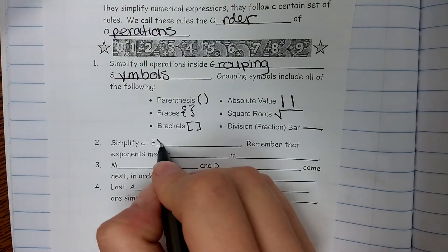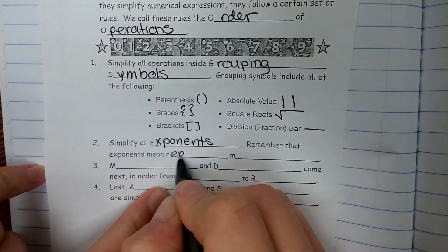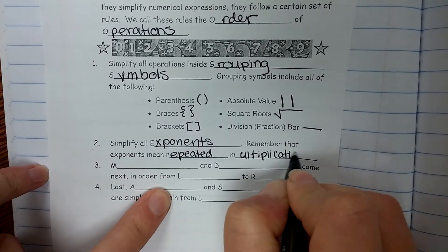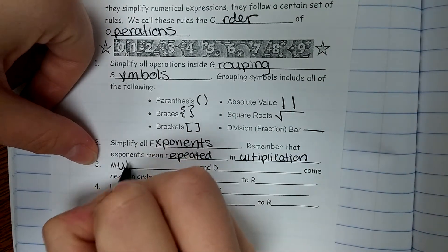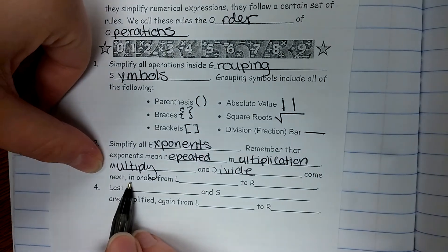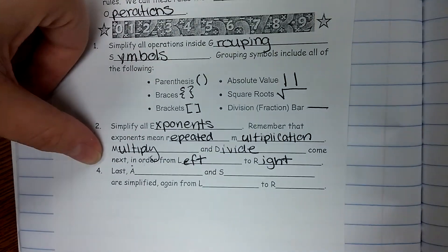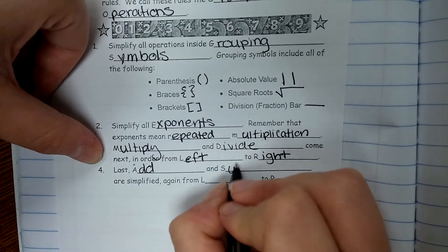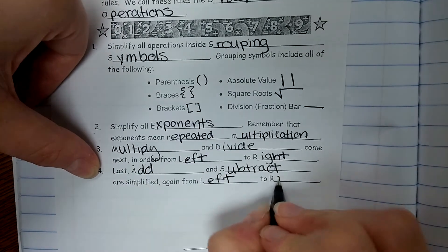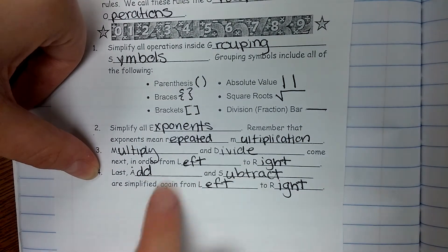So step two is to simplify all exponents. Remember that exponents mean repeated multiplication. Step three is to multiply and divide, come next, and they're in order from left to right, so you do them at the same time. And last, we need to add and subtract in order from left to right. So if you see subtraction first to the left, you would do subtraction first.